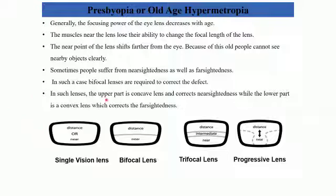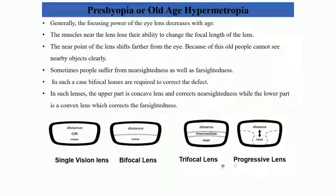In bifocal specs, the upper part is a concave lens correcting near-sightedness, while the lower part is a convex lens correcting far-sightedness. Apart from bifocals, we also have trifocal lenses, which provide better vision for near, intermediate, and distant objects. Lastly, progressive lenses help with close work like reading, middle-distance work like using a computer, and distance vision like driving — providing a much wider range.